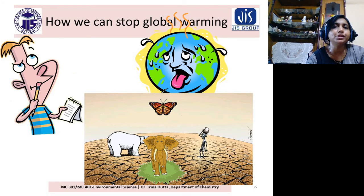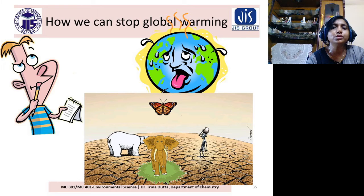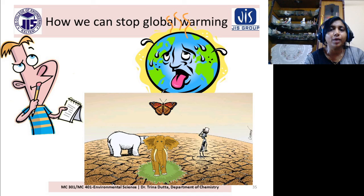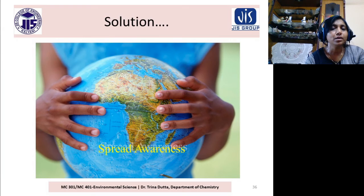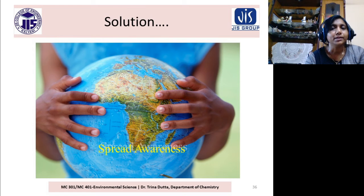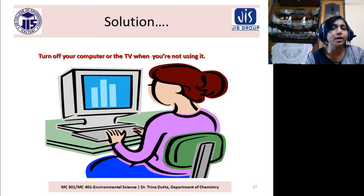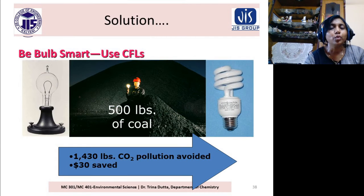How can we stop global warming? That is the most important part. We understood what global warming is, its causes and sources. We have to protect our environment and stop global warming. The most important part is to spread awareness — if we work together, only then can we win. We must turn off our computers or TVs when we are not using them.